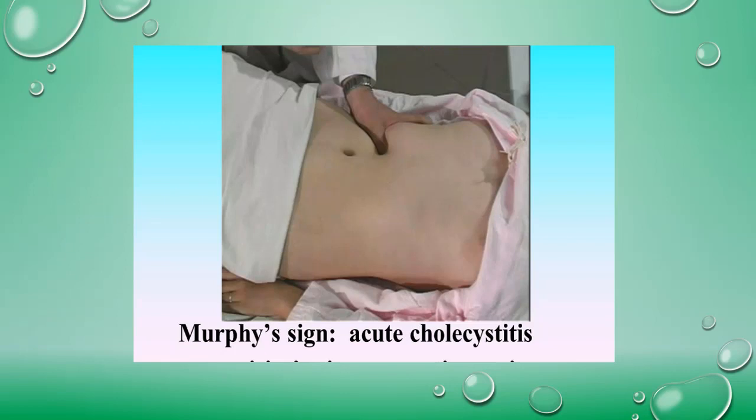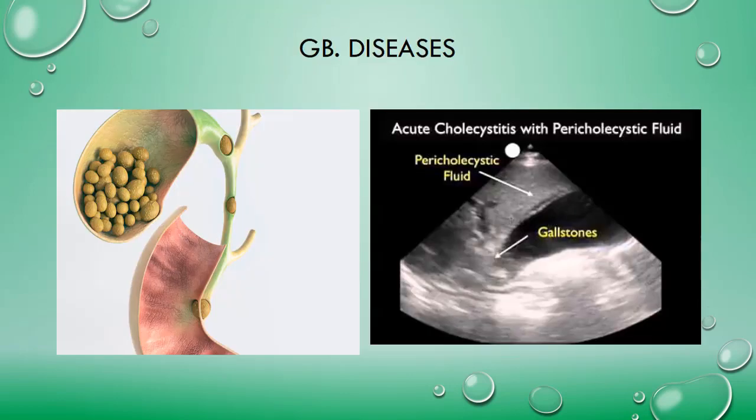The gallbladder can also be palpable in cases of carcinoma of the head of the pancreas, carcinoma of the gallbladder, and mucocele. This covers how to palpate the gallbladder and how to diagnose its associated diseases.